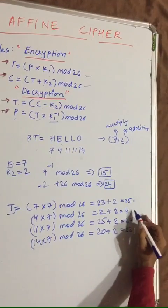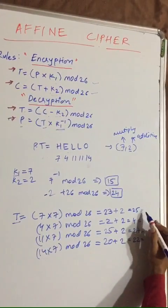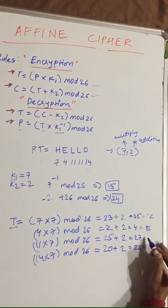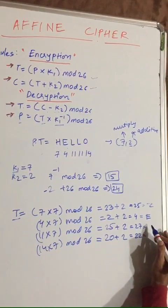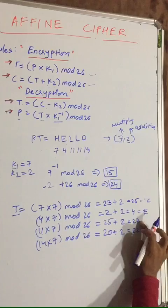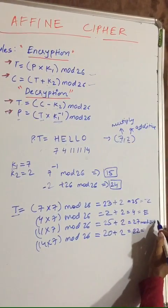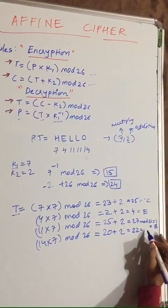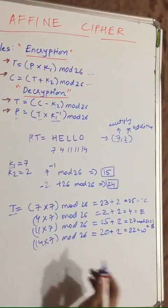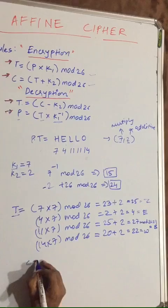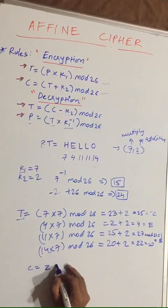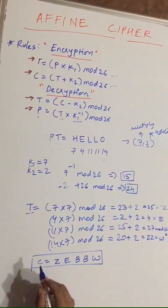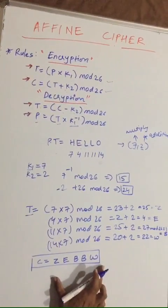What are the corresponding alphabets of 25, 4, 27, and 22? For 25 it is Z, for 4 it is E. For 27 mod 26 will be 1, so this will be equal to B. And 22 is W. So the ciphertext C will be equal to ZEBBW. This completes the encryption portion.